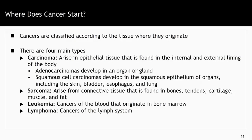Where does cancer start? Cancers are classified according to the tissue where they originate. There are four main types. Carcinomas arise in epithelial tissue found in the internal and external linings of the body. Adenocarcinomas, the most common form of cancer, develop in an organ or gland — for example, prostate cancer, breast cancer, and liver cancer. Squamous cell carcinomas develop in the squamous epithelium of organs including the skin, bladder, esophagus, and lung. Sarcomas, which account for less than 10% of all cancers, arise from connective tissue found in bones, tendons, cartilage, muscle, and fat. Leukemias are cancers of the blood that originate in the bone marrow, and lymphoma refers to cancers that develop in the lymph system.